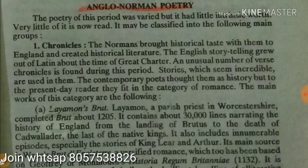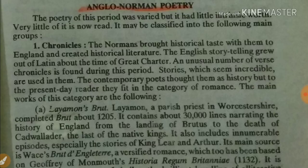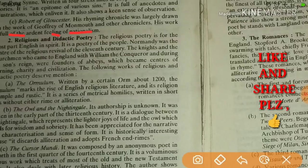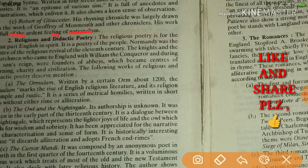Now let's start today's topic: Anglo-Norman poetry. The poetry of this period was varied and we can divide it into three to four parts. First is chronicles. Second is religious and didactic poetry — didactic means giving a lesson, a moral from the poem. Third is romance. We will be talking about these three topics today.